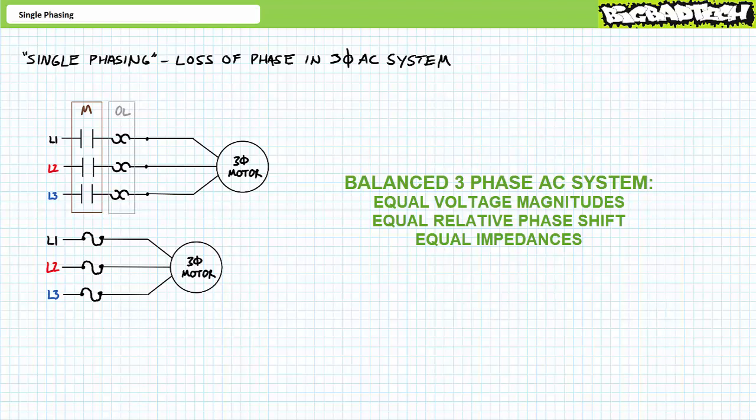In the worst case scenario, the complete loss of a single phase in a three-phase AC system dramatically changes the electrical properties of that system. Loss of a single phase is referred to as single phasing. This is a bit of a misnomer because the system still experiences two phases and might more appropriately be called bi-phasing.